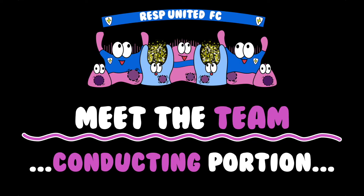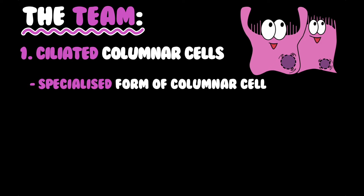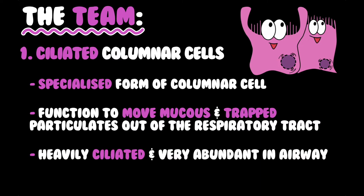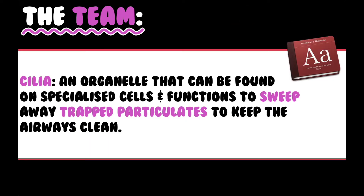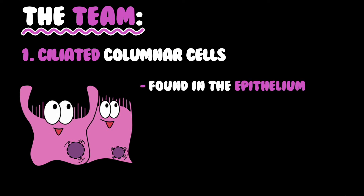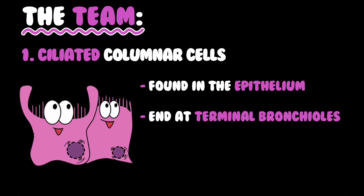Let's meet the team — the conducting portion. First, ciliated columnar cells. These are a specialised form of columnar cell that function to move mucus and trapped particulates out of the respiratory tract. They are heavily ciliated and very abundant in our airway. A cilium is an organelle found on specialised cells that functions to sweep out particulates to keep airways clean. Ciliated columnar cells are found in the epithelium and end at terminal bronchioles.